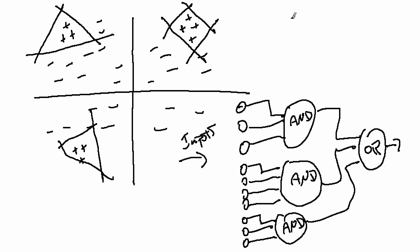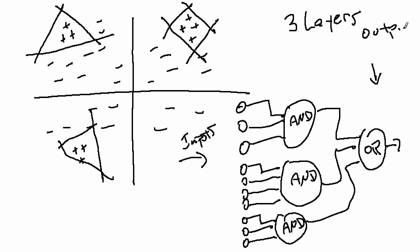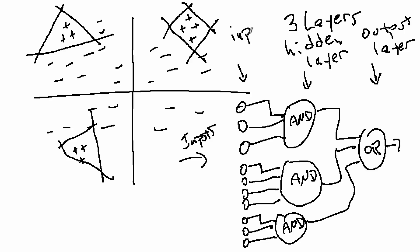We can see that this three-layer neural network — three layers — could learn this region. We've overcome the restriction of a single perceptron. There's some vocabulary here: this over here is the output layer, this is referred to as the hidden layer, and this is the input layer. The theoretical result is that three layers is enough to learn any region — this is very powerful.